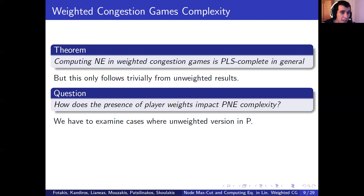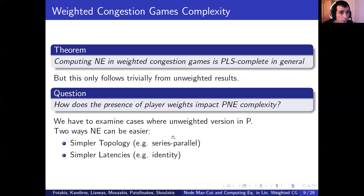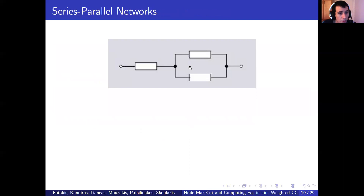Specifically, there are two cases we will be especially interested in. Firstly, a congestion game can become easier in the unweighted case due to a simpler topology, especially in the series-parallel case. Secondly, if the latency functions themselves are very simple, such as being identity functions. So we are going to examine these two cases where equilibria are much easier to compute in the unweighted case.